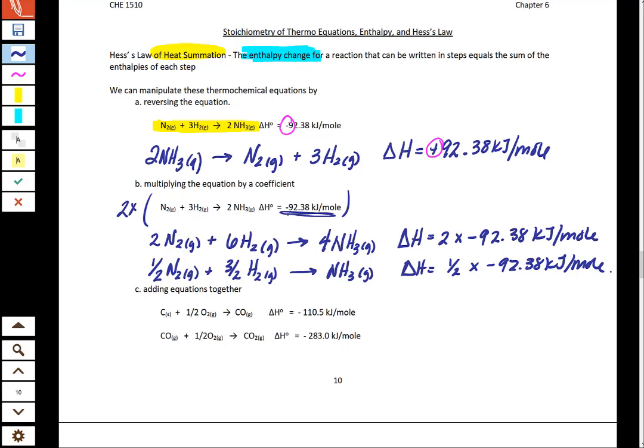So then the final thing that we're capable of doing is adding equations together. So when we add equations together, what we're looking for are things that are the same on opposite sides of our reaction arrow. So here's our reaction arrow, here's our reaction arrow.